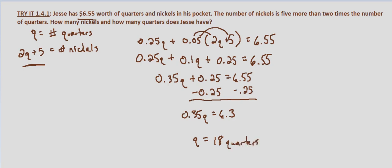To determine the number of nickels, we use the expression we originally set up: 2Q + 5. So the number of nickels equals 2 times 18 plus 5, which equals 36 plus 5, which equals 41 nickels.